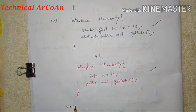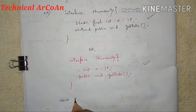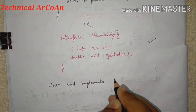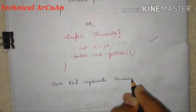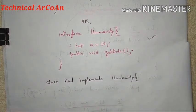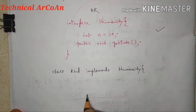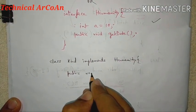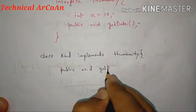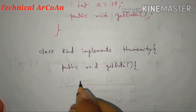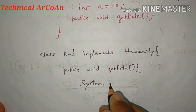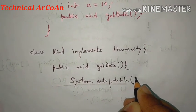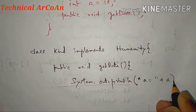Now we implement the interface in a class. Suppose the class name is 'Kind' and it implements 'Humanity'. Then we write the body of the abstract method: public void getData, and we write a statement — System.out.println — to print the value of a.